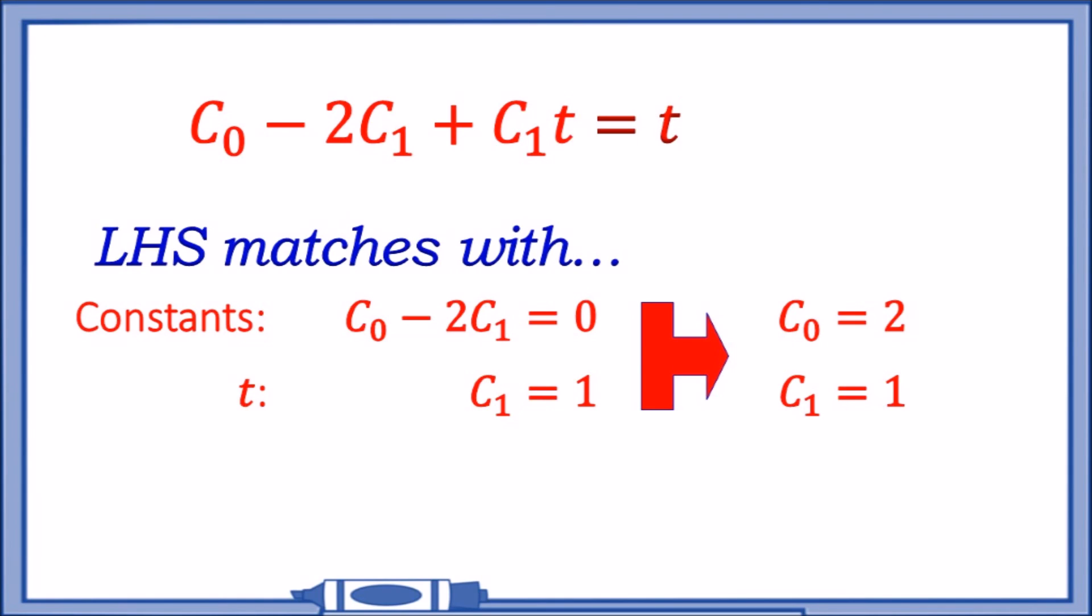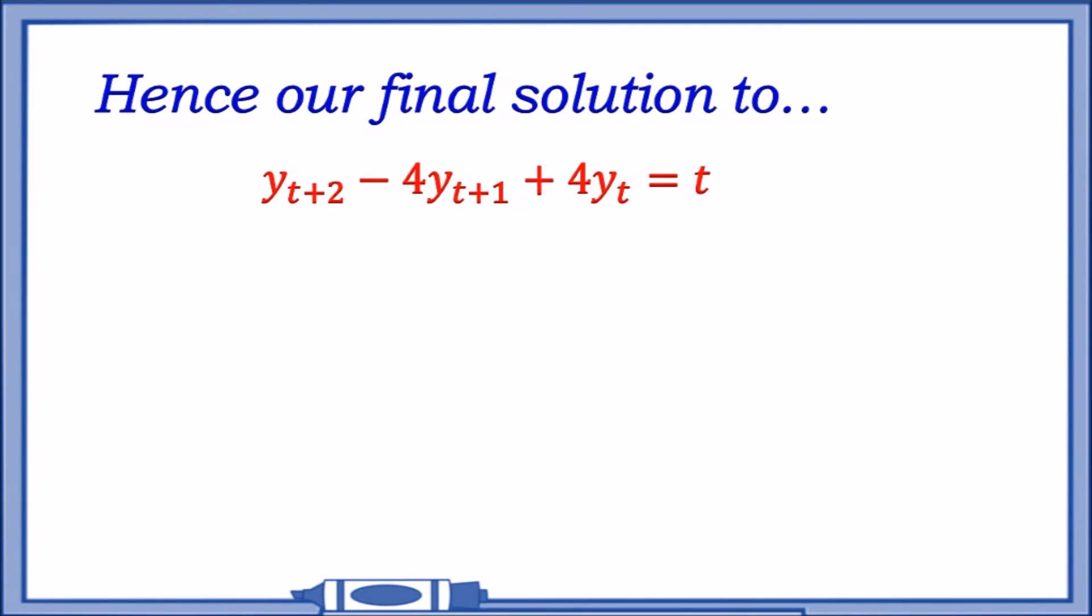Believe it or not guys, this is pretty much the end. From this point, substituting this back into our particular solution is going to finally give us t + 2. Hence, our final solution to this equation—the entire deal—this is the complementary plus particular. It's finally going to yield y(t) = A·2^t + Bt·2^t + t + 2.